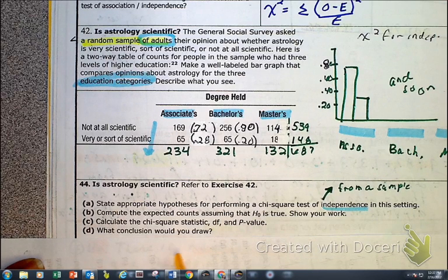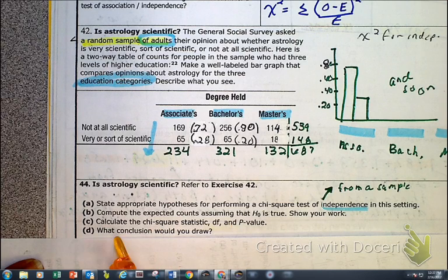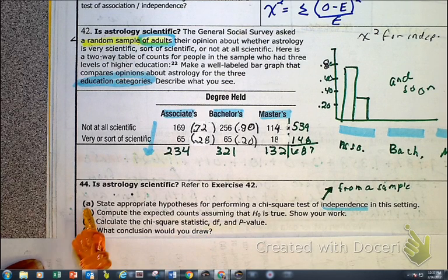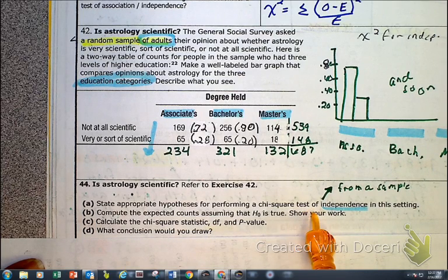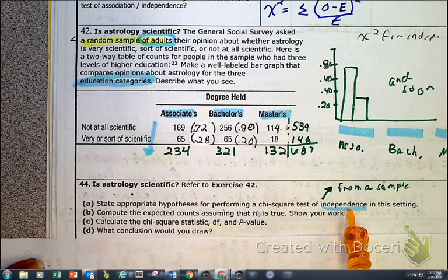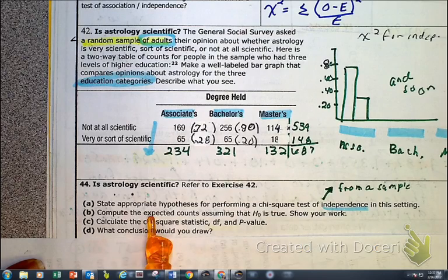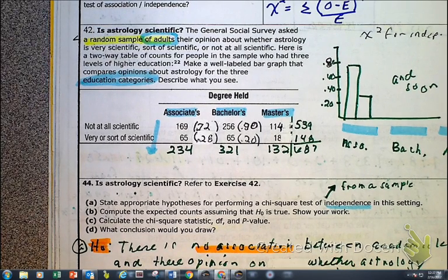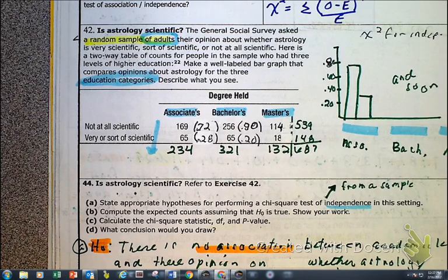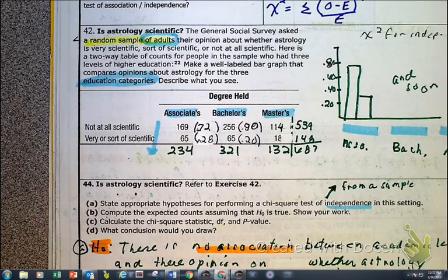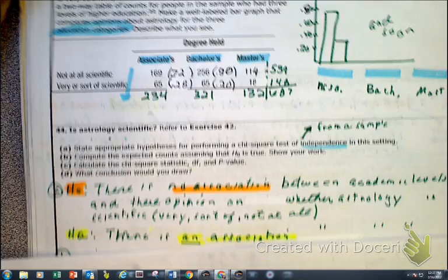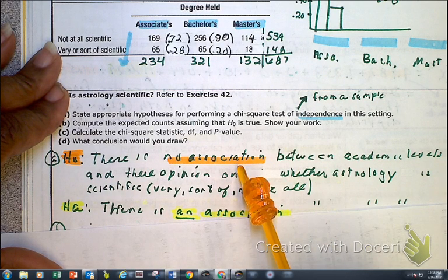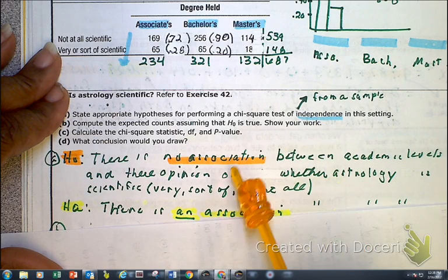Now problem number 44 is telling us to state the appropriate hypothesis, do our expected counts, calculate our chi statistic, degree of freedom, p-value, and the conclusion. So what are they saying? State, plan, do, conclude. And yes, because this is a chi-squared test, here they're telling us a chi-squared for independence, and this is given our samples right here. So what is the appropriate hypothesis going to be? There is no, love the word no, association between the academic levels on these opinions, whether the astrology is scientific or not, and which takes us to our HA, there is an association. And doesn't this look similar to what we've done before? Oh yeah, except now we've got to plug in the word here, association, or you can use the word they are independent, but I think for some of you using no association might be less problematic.